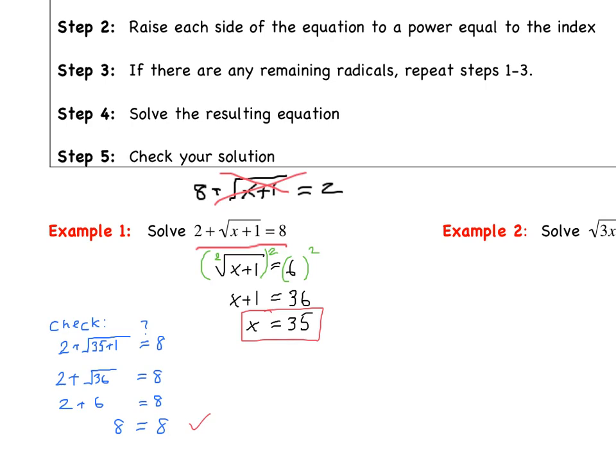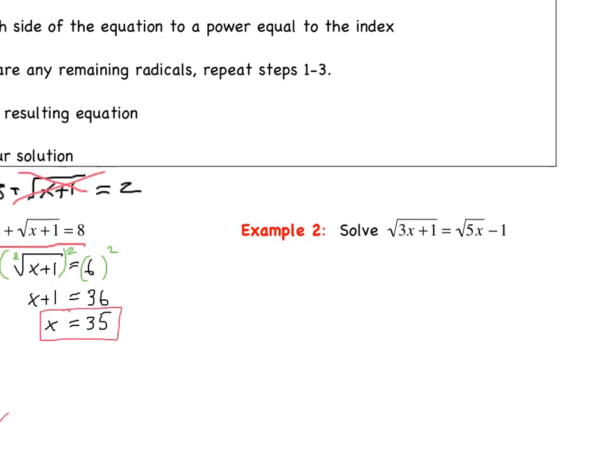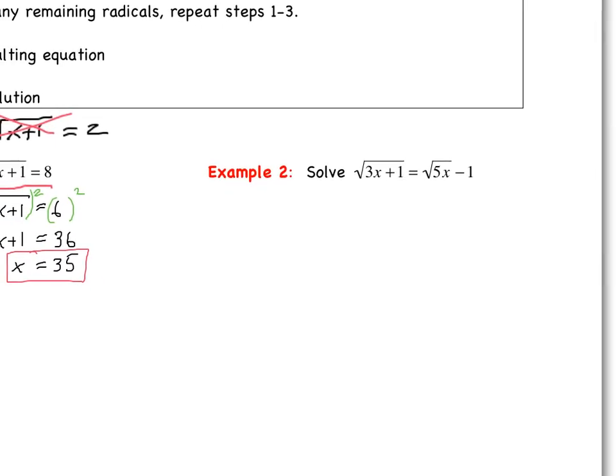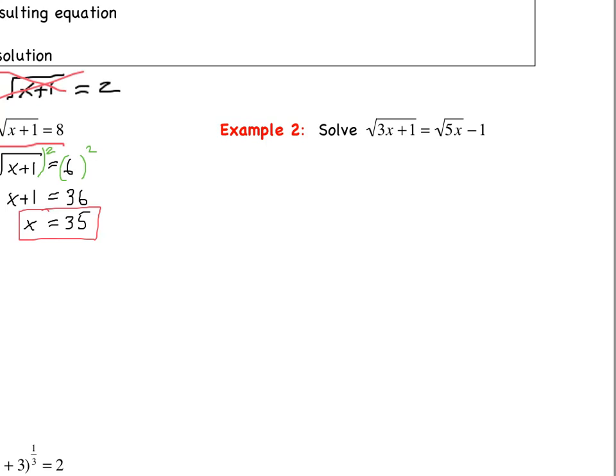Let's take a look at our second example. What we should notice this time is we've got a couple of radicals. Step 1 says isolate the radical on one side of the equation. When you have multiple radicals, you choose one to isolate first. In this case, we're already isolated, so we raise both sides equal to the index of that radical. Our index is 2, so we raise both sides to the second power.